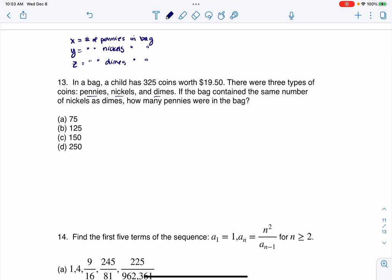Okay, so I've got three variables, which means there must have been three equations somehow written into this problem. And let's go with the numbers, right? So there's going to be something with 325, there's going to be something with 1950, and there's going to be something with the fact that there's the same number of nickels as dimes. So let's just start with the 325 coins.